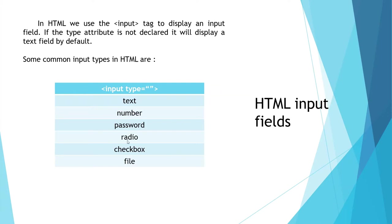Both radio and checkbox type inputs need to be checked. The main difference is that inside a group of radio type input elements, you can only have one of them checked at a time, and one of them must always be checked. Meanwhile in a group of checkbox type elements, you can have multiple or none of them checked at a time.